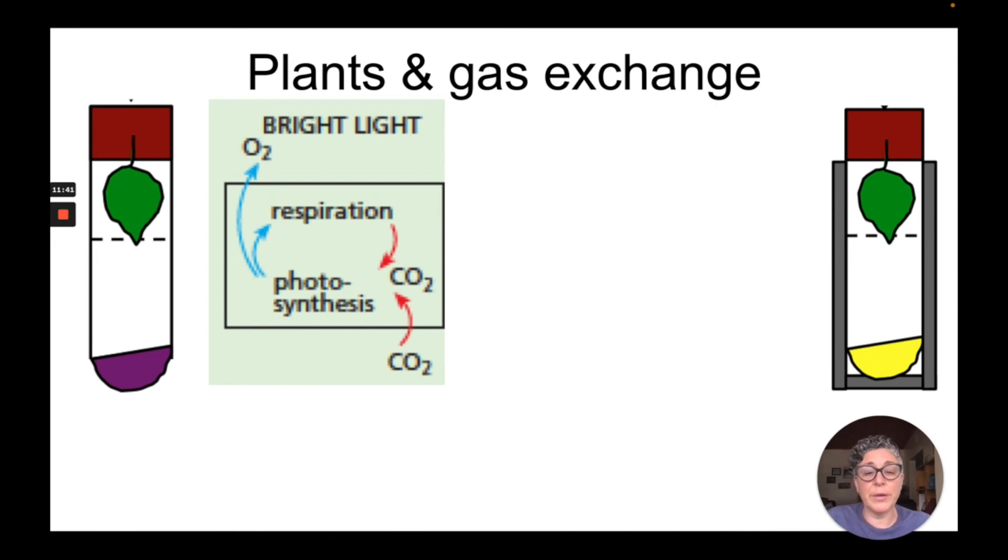The plant is using up all the carbon dioxide from the atmosphere, in this case the test tube, thereby turning the hydrogen carbonate indicator purple. So we see that in bright light, plants do photosynthesis and respiration.